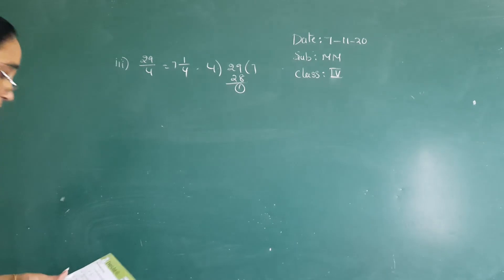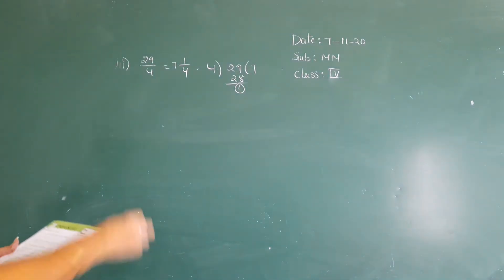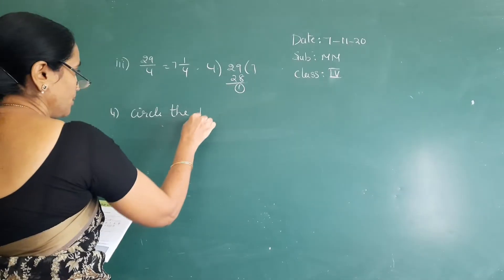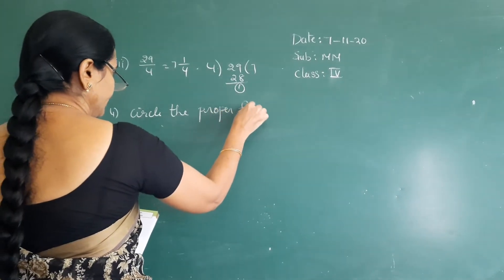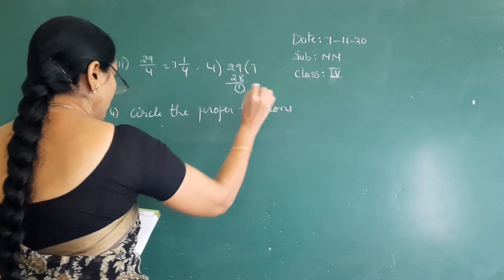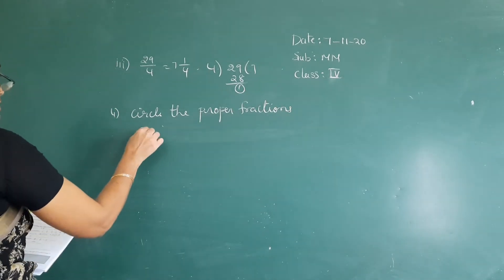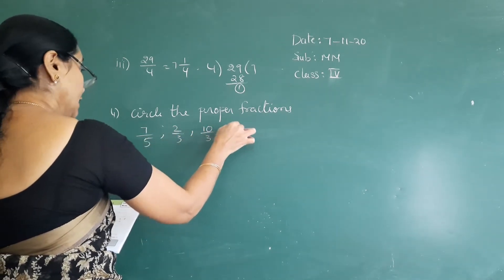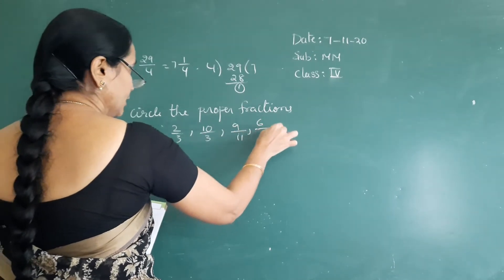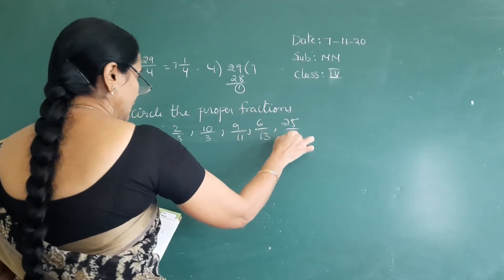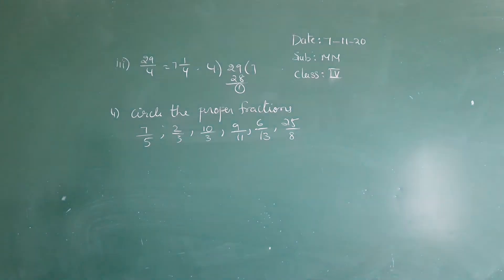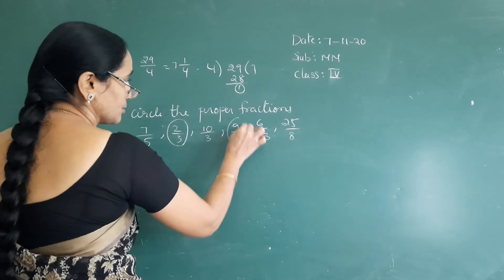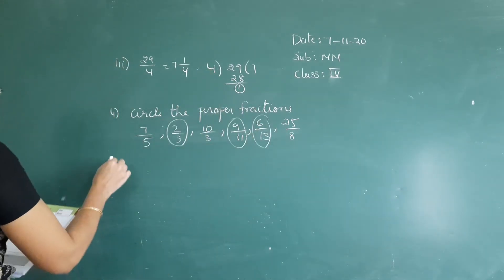See the next problem: identify the proper fractions. Proper fractions means the numerator is less than the denominator. They give you some fractions: 6 by 13, 25 by 8. Identify which ones have numerator less than the denominator. Those are the proper fractions.